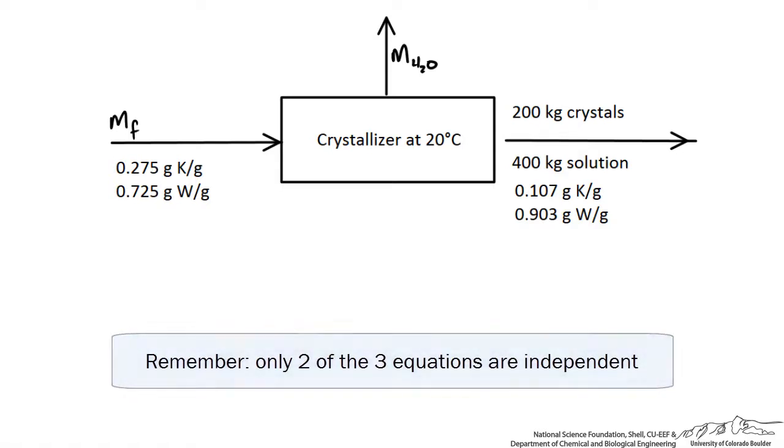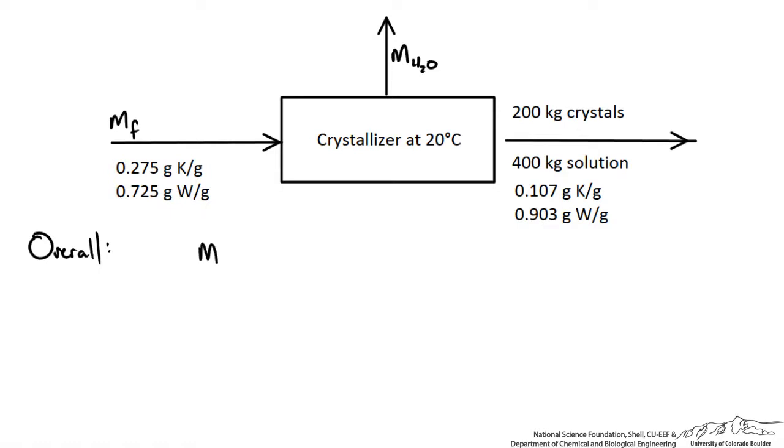So let's start with an overall balance. We know that the mass of the feed has to be equal to the mass of the water that is being evaporated out, plus 600 kilograms that are leaving. And that is 200 kilograms of our crystals and 400 kilograms of our solution.